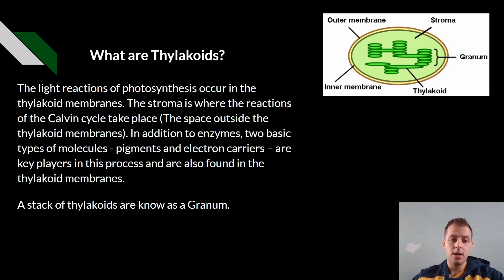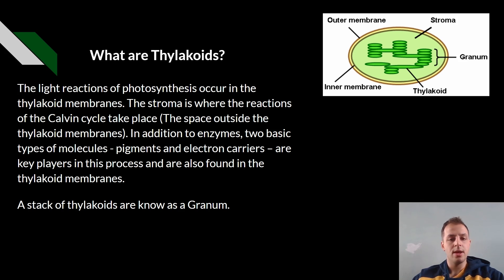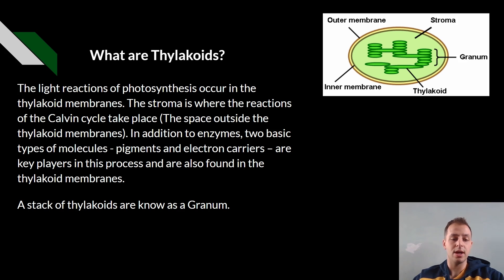So what are thylakoids? The light reactions of photosynthesis occur in the thylakoid membranes. The stroma is where the reactions of the Calvin cycle take place — this is the space outside the thylakoid membranes. In addition to enzymes, two basic types of molecules — pigments and electron carriers — are key players in the process and are also found in the thylakoid membranes. A stack of thylakoids is also known as a granum.